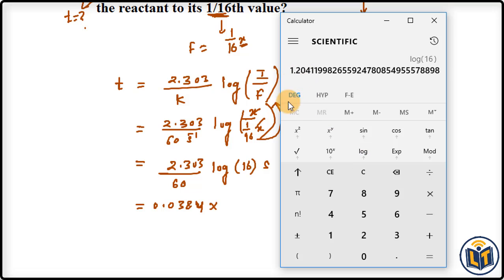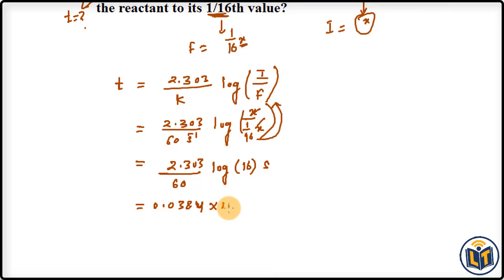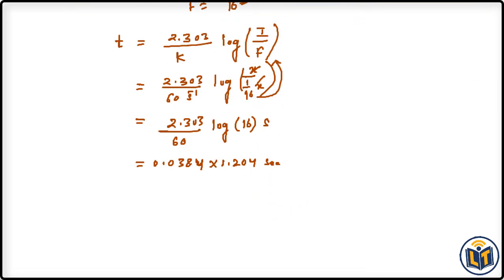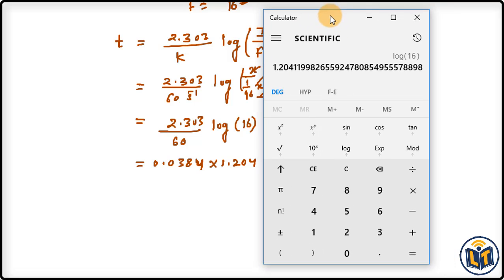Now we can multiply these values. 0.0384 multiplied by 1.204 gives us 0.0462.